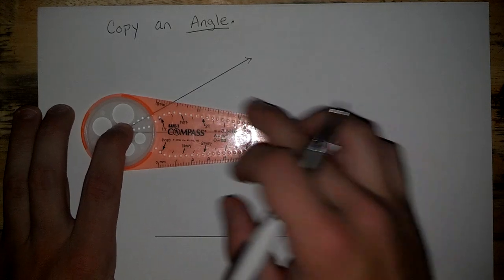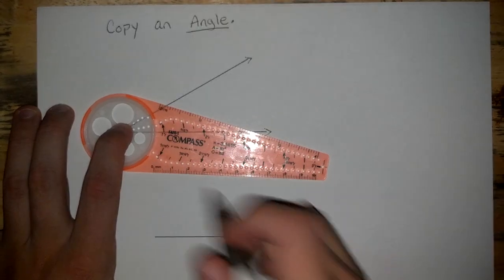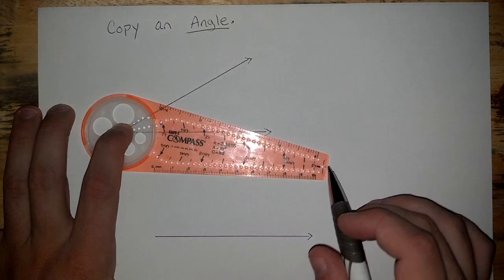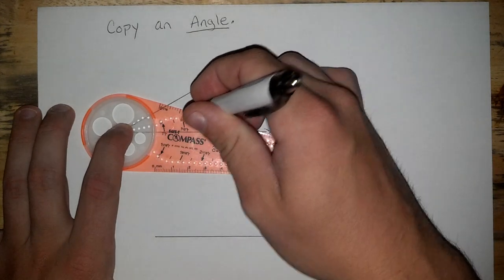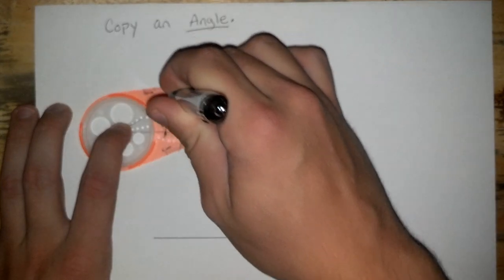Then, make an arc all the way through your angle using any mark along the compass that you would like. I'm going to use this one right here next to a bold line. That way I can keep track of which one I use.